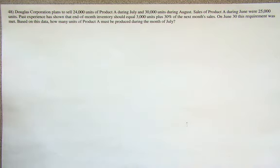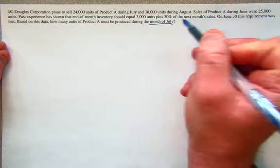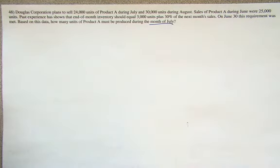This question is asking us to figure out how many things we need to make or produce during the month of July. Once we know what our sales budget is, then we can use the beginning inventory and whatever parameters we have for ending inventory to figure out how many things that we need to make during a particular month.